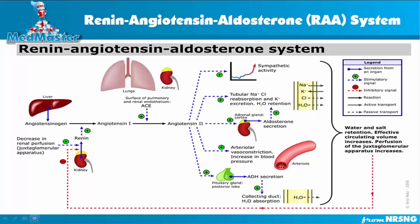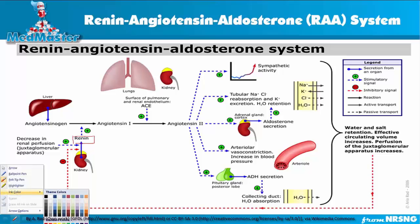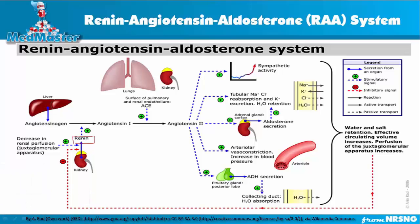Let's take a look at the RAA system. This diagram is presenting the RAA system — it may look complicated at first, but it's not really. The renin enzyme gets secreted by the kidneys when the kidney doesn't get enough blood flow, due to a blood pressure fall, blood loss, or if the body doesn't have enough sodium to reabsorb water. When the kidneys aren't getting enough blood flow, a specialized cell in the kidney releases renin.